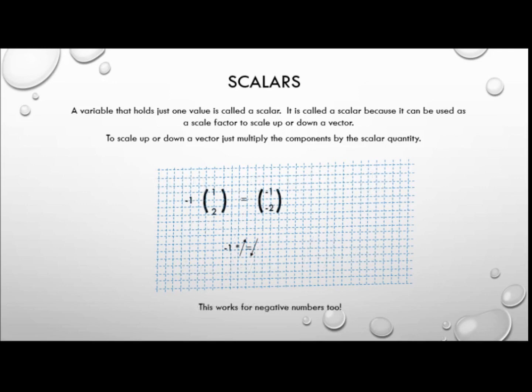And in fact we can do that with negative numbers as well. So negative 1 times vector (1, 2) would be equal to vector (-1, -2). This has the effect of effectively having the arrow being the same magnitude but pointing in the opposite direction.